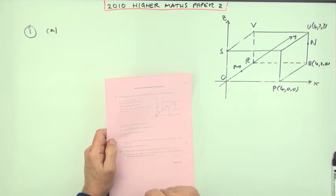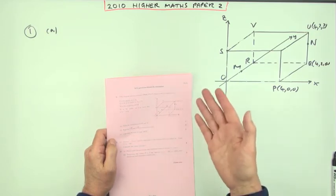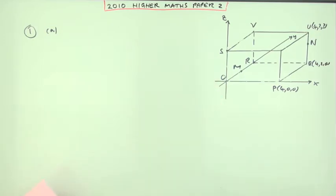Now what's the first part? State the coordinates. Notice it just says state the coordinates of M and N, which means you don't actually need any justification for it.